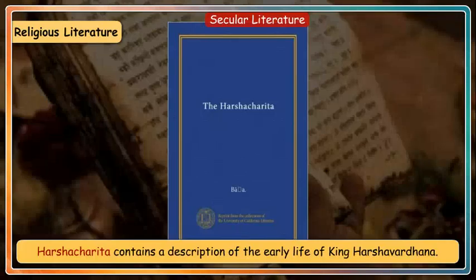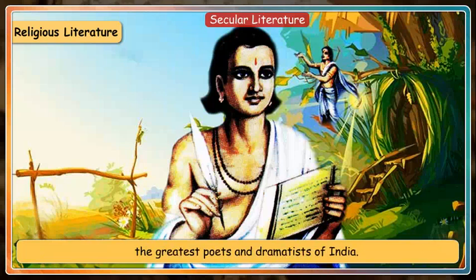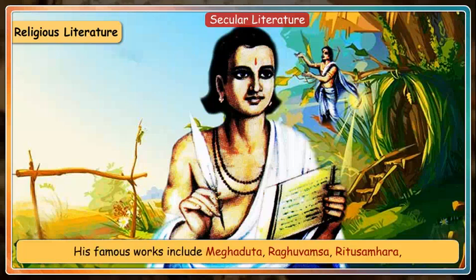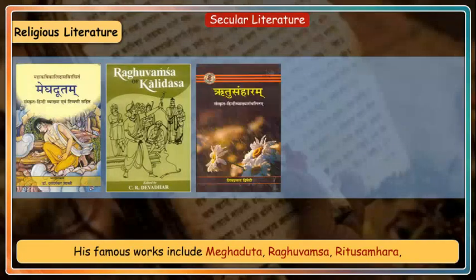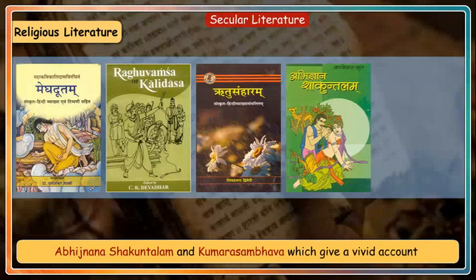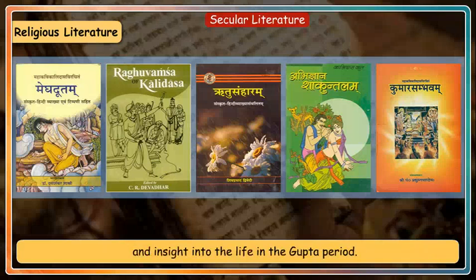Harshacharitra contains a description of the early life of King Harshvardhana. Kalidas lived during the reign of the Gupta kings and is considered one of the greatest poets and dramatists of India. He has written many poems and plays in Sanskrit. His famous works include Meghdoot, Raghu Vamsha, Ritu Samhara, Abhijnanashakuntalam and Kumar Sambhava, which give a vivid account and insight into life in the Gupta period.